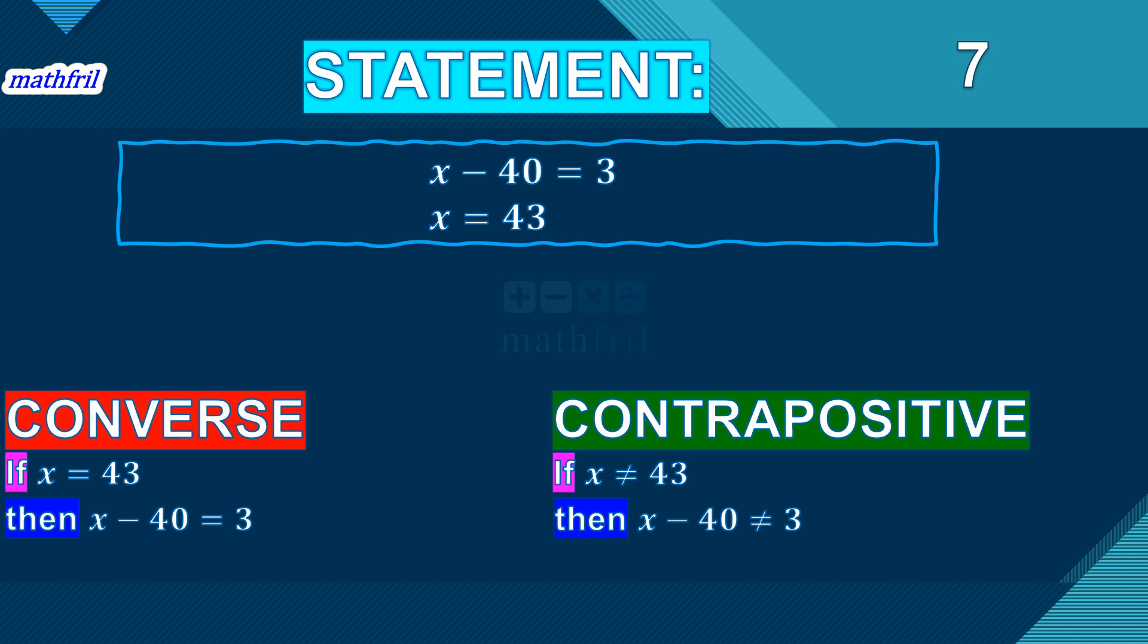The contrapositive of this converse statement is: if x is not equal to 43, then x minus 40 not equal to 3. And these are both true. The converse is true, and the contrapositive is true.